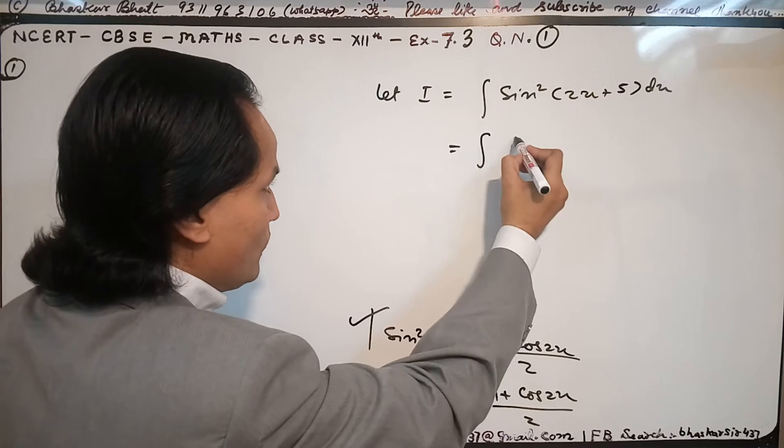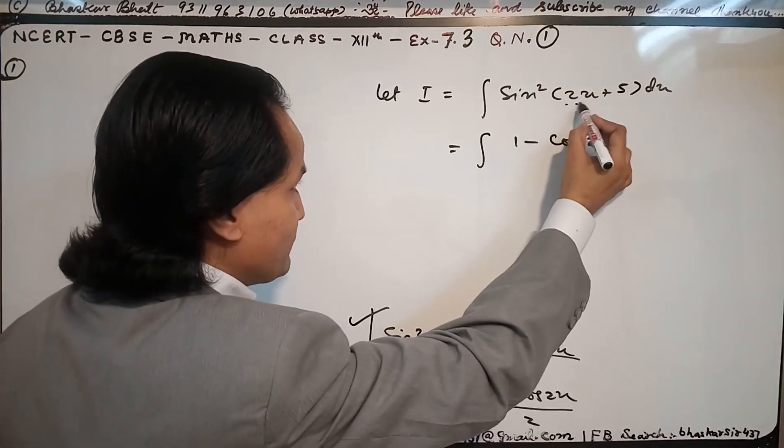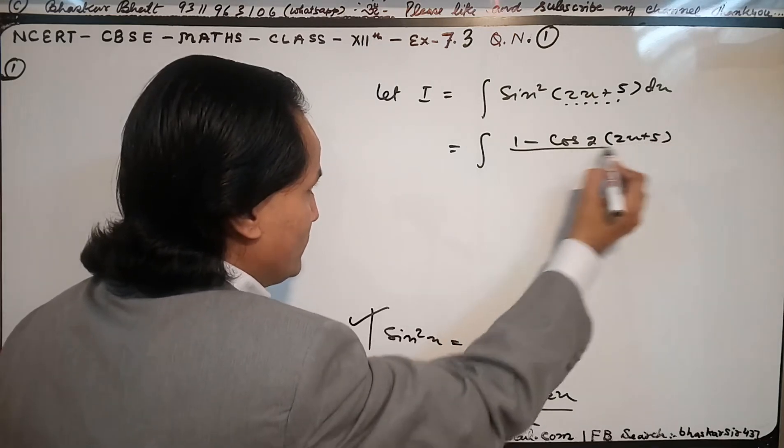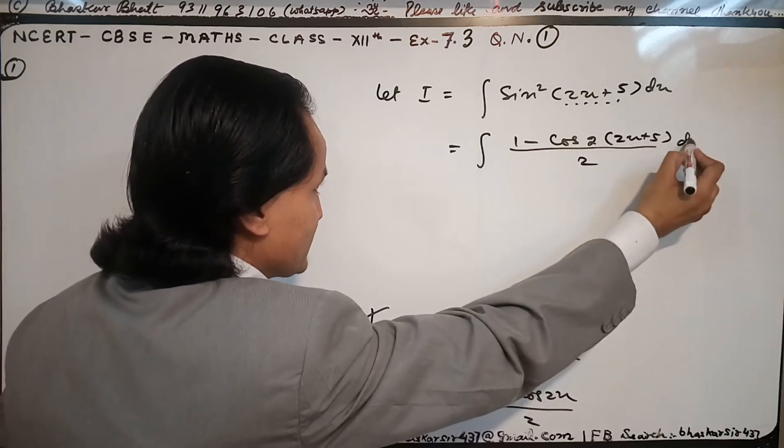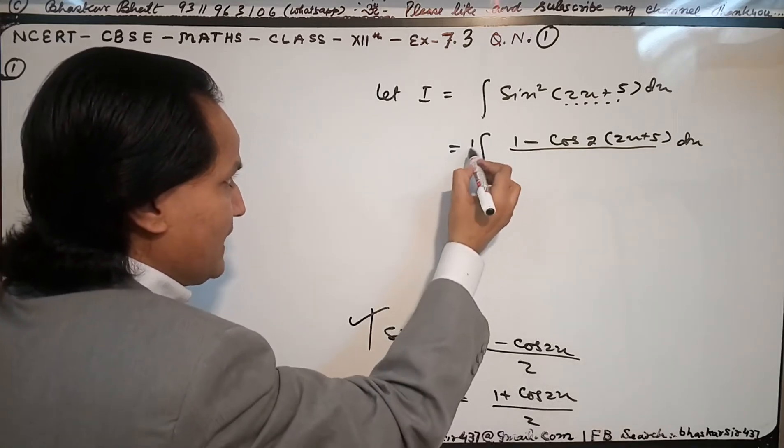I have (1 - cos 2(2x + 5))/2 with respect to dx. I will take this 2 outside.